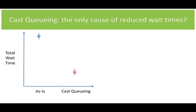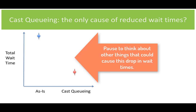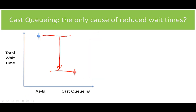But wait — could something else be causing these reduced wait times other than cast queuing? Pause the video for a second and think of a few other things that might cause this big drop in total wait times that may not be cast queuing. Now you've had a chance to think. Here's some things I was thinking about: what if potentially there is some really bad PR for Disney that happened in August or just before August? Wait times could have gone down because there were fewer people there.